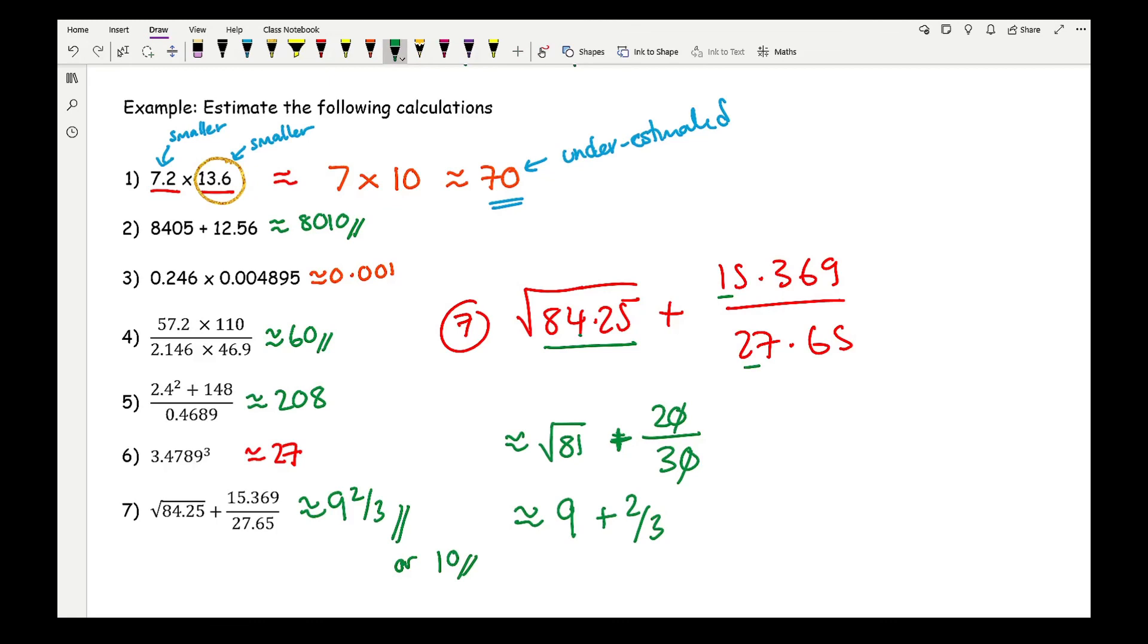Also, just be wary of when you're overestimating and when you're underestimating, and that all depends on each individual number. For example, here I've got 15.369 and I've used 20, so I've overestimated that number. Here with the square root, I've got 84.25 and I've instead used 81, so here I have underestimated. It's just a case of tallying up which ones you're overestimating, how many you're underestimating, and then you can make a decision on whether your answer is either an underestimate or an overestimate. Now I will put some practice questions in the description below along with their answers for you to check your understanding of this video.